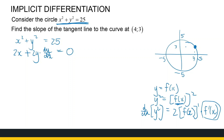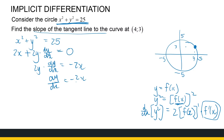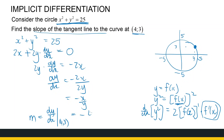We want dy/dx alone because we're after the slope of the tangent line, so we make dy/dx the subject of the formula. We get dy/dx = −2x / 2y, which is just −x/y. The slope m equals the derivative evaluated at the point (4, 3), so we substitute x = 4, y = 3, giving −4/3. Looking at the sketch, that looks like a reasonable number for the slope of that tangent line.